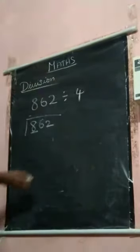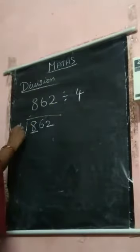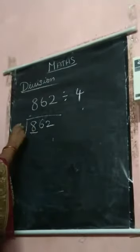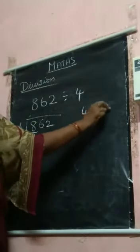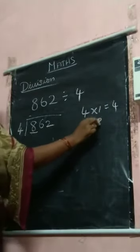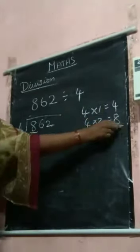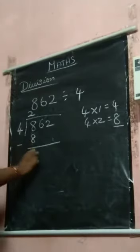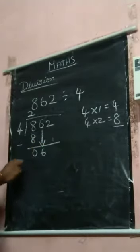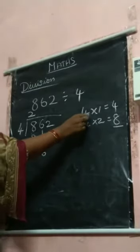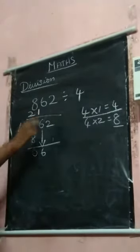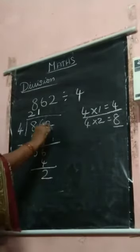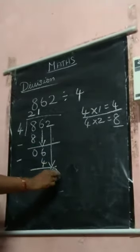862 divide by 4. Take 8. 8 is bigger than 4, so you start from 1. 4 1's are 4. 4 2's are 8. 8 minus 8 is 0. You bring down this 6. In the 4 times table, 6 will not come exactly — 4 1's are 4. Subtract: 6 minus 4 is 2. You bring down this 2, making 22.